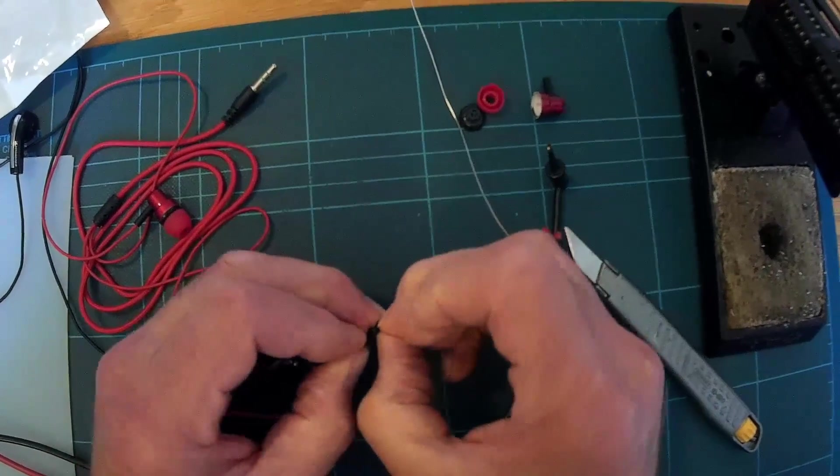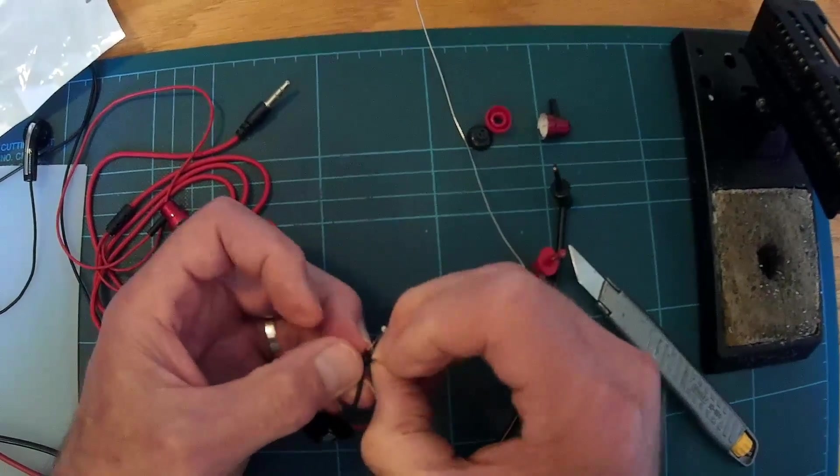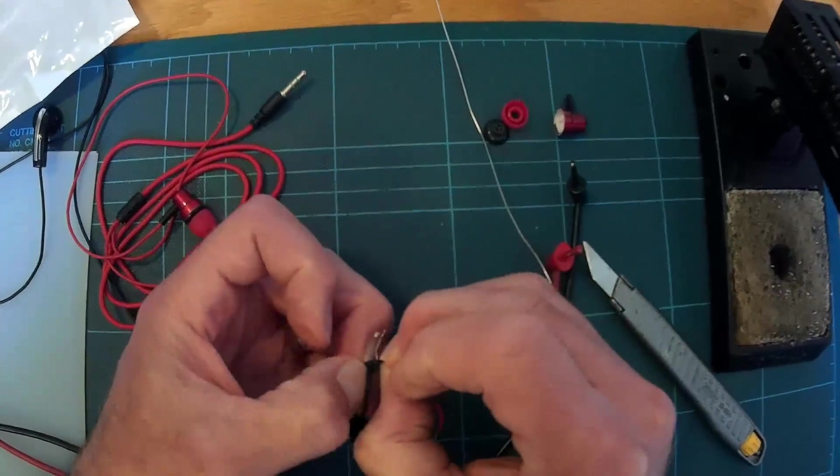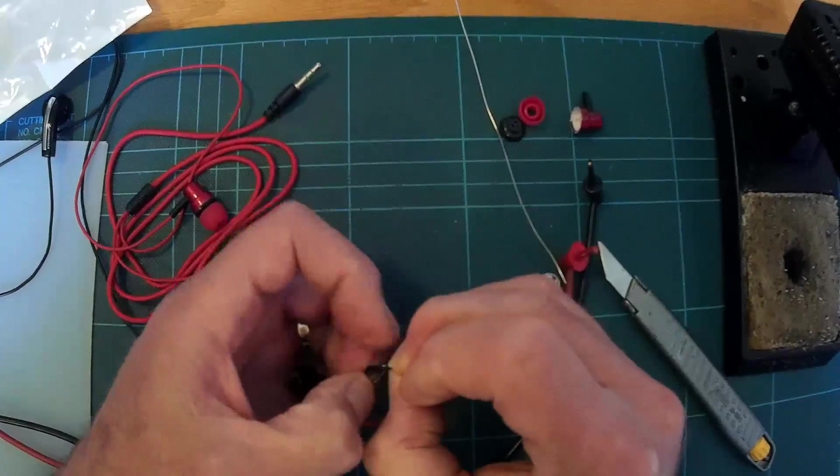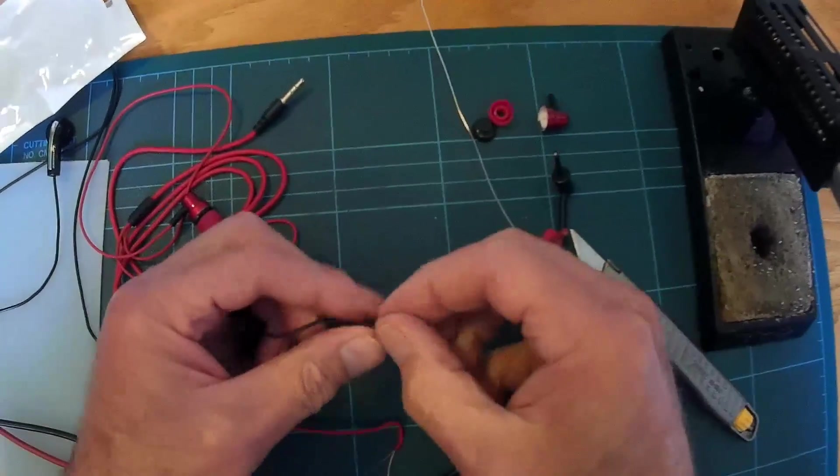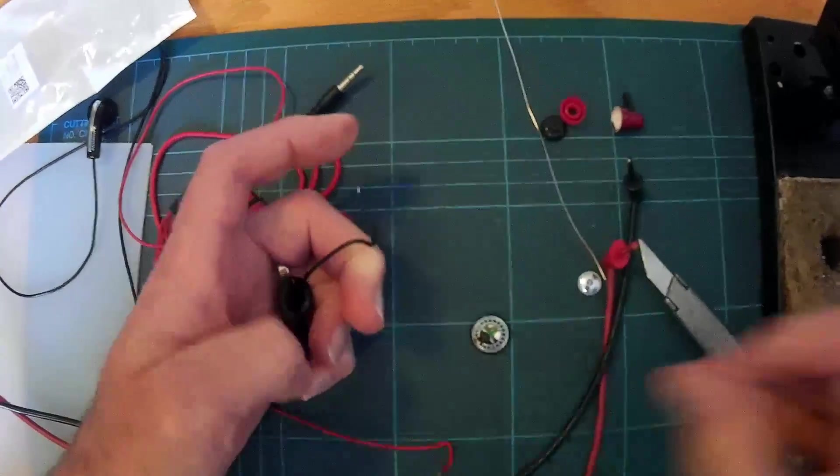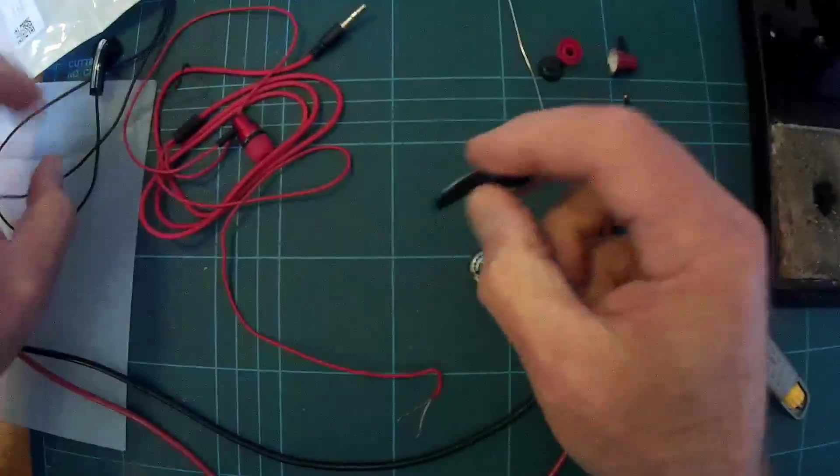So now we can just undo the knot on this one. Let's get this lead off. I'm just going to remove a bit of solder, make sure it slides out without any problems. Okay, good.